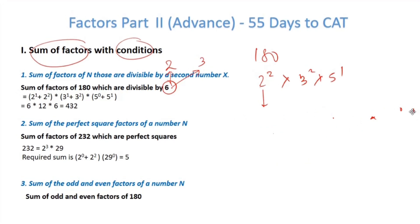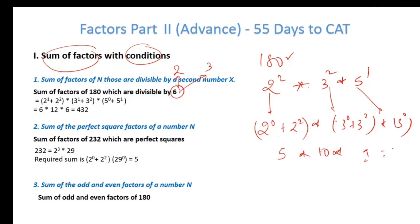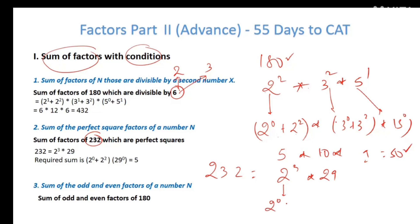How to calculate the sum of perfect square factors of n? For perfect squares of 180, we take 2⁰ and 2², and 3⁰ and 3², and only 5⁰. For another example with 232 = 2³ × 29, for perfect squares we take 2⁰ and 2², and 29⁰ only — we can't take 29¹. So the sum becomes (1 + 4) × 1 = 5.